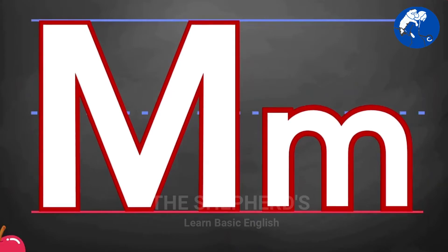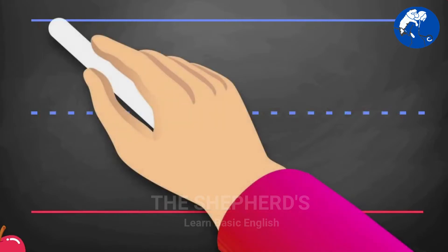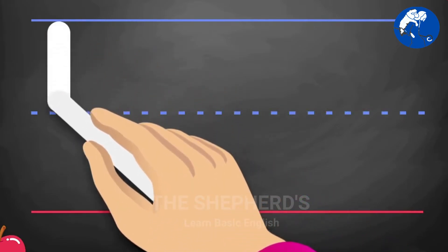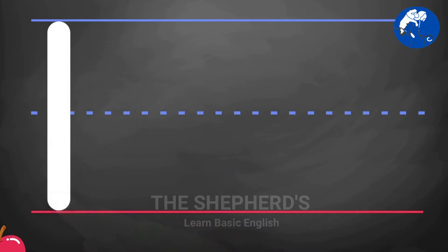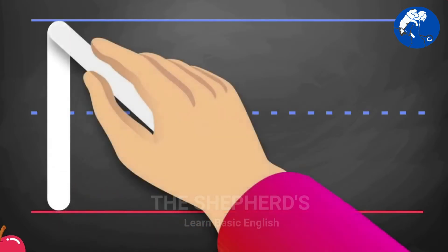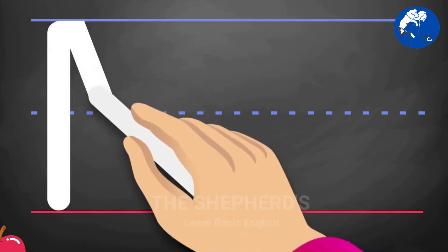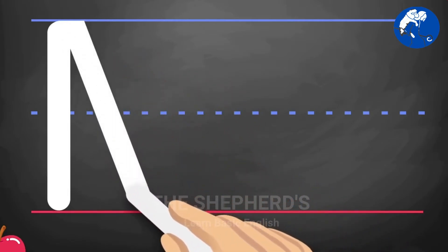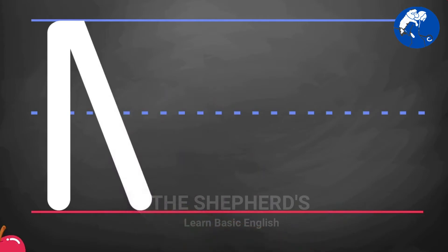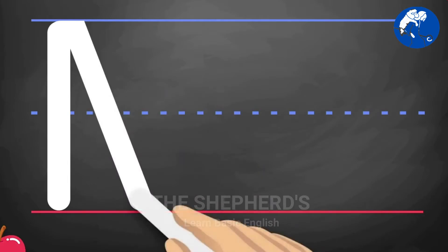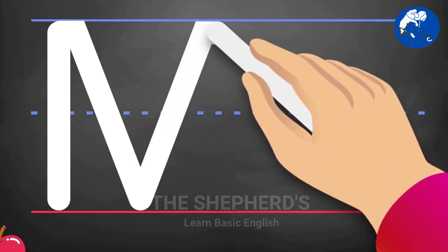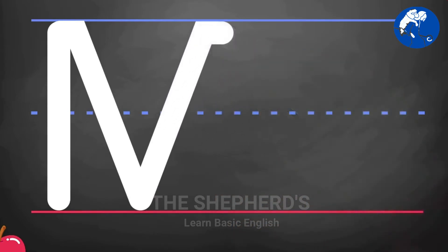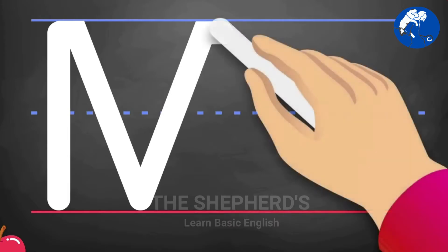The letter M. Uppercase M: Start from the top, pull down. Slant down, slant up, and pull down again.